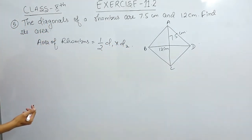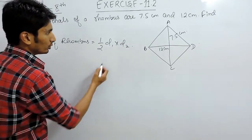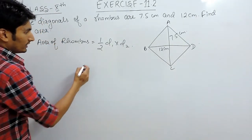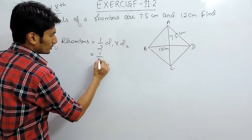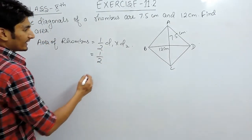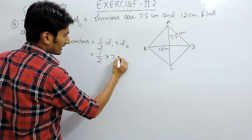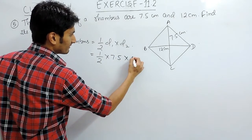This means that area is half d1 into d2, where d1 and d2 are its diagonals. We can substitute the values: the first diagonal is given as 7.5 and the second is given as 12.